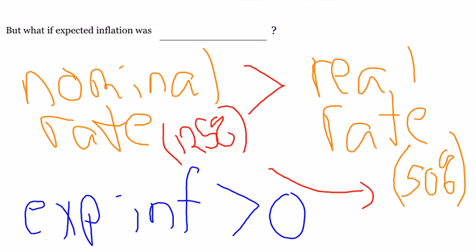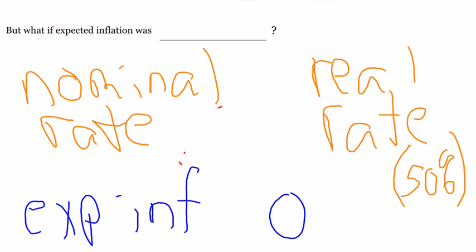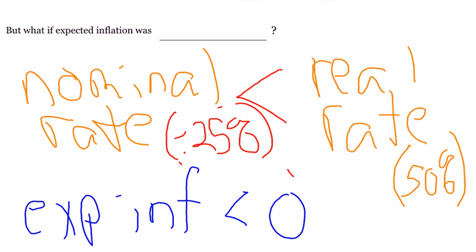Well, everything changes when you have deflation instead of inflation. And so now let's look, what if expected inflation is now less than zero? You expect prices to fall over the time the money is lent. Well, in that case, the nominal interest rate should be less than the real interest rate. And in our example, that nominal rate was negative 25% compared to the real interest rate of 50%. And this last one may seem weird,